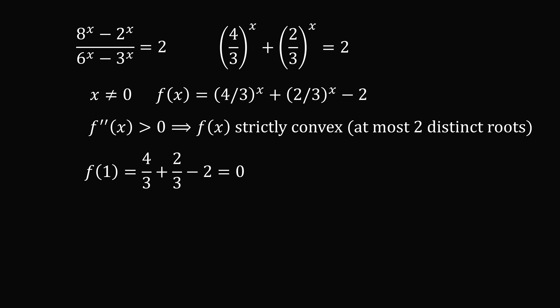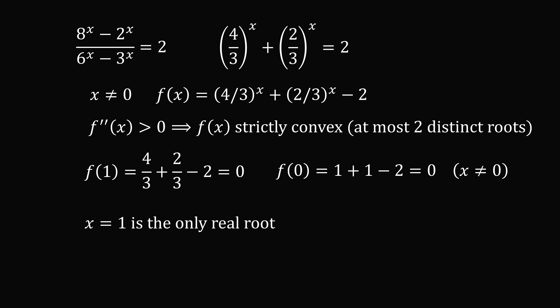We know f of 1 is a root by direct substitution: 4 over 3 plus 2 over 3 minus 2 equals 0. Now if x could equal 0, then f of 0 would equal 1 plus 1 minus 2, which equals 0. So the function f of x, defined everywhere, would have two roots at x equals 1 and x equals 0. But since in the original equation x cannot equal 0, that cannot be a solution. Therefore, x equals 1 is the only real root — and that's the answer.